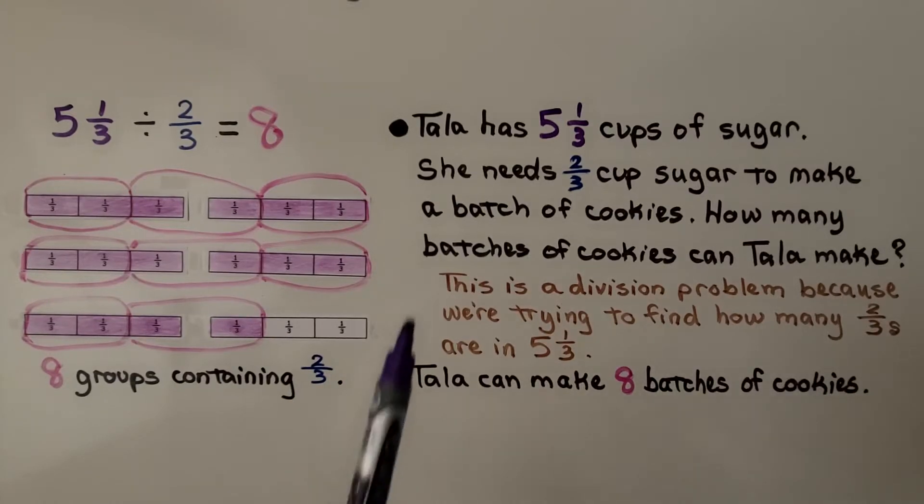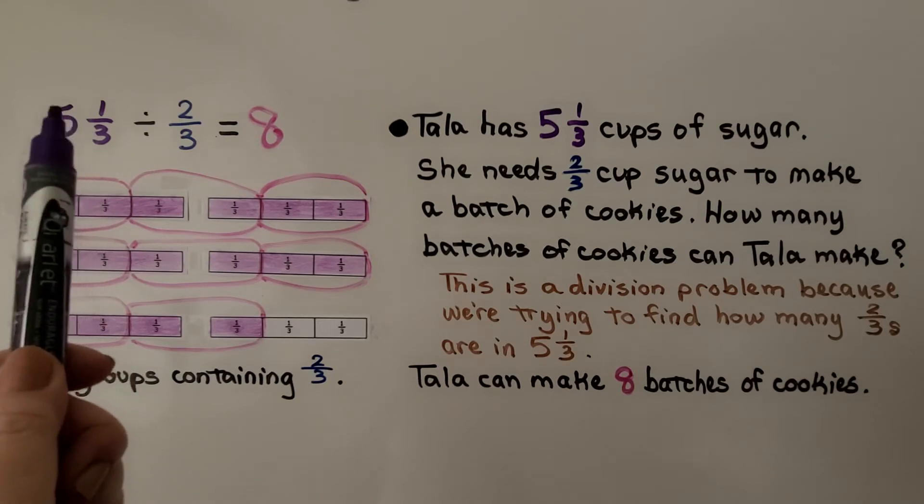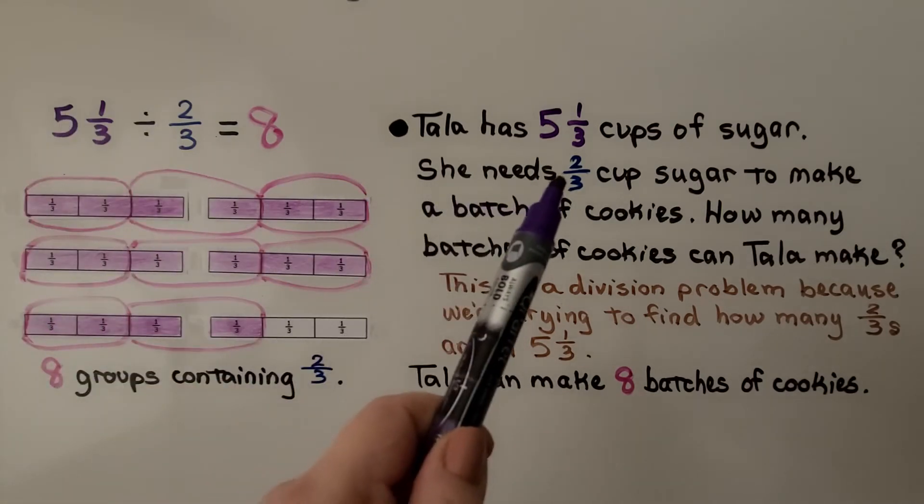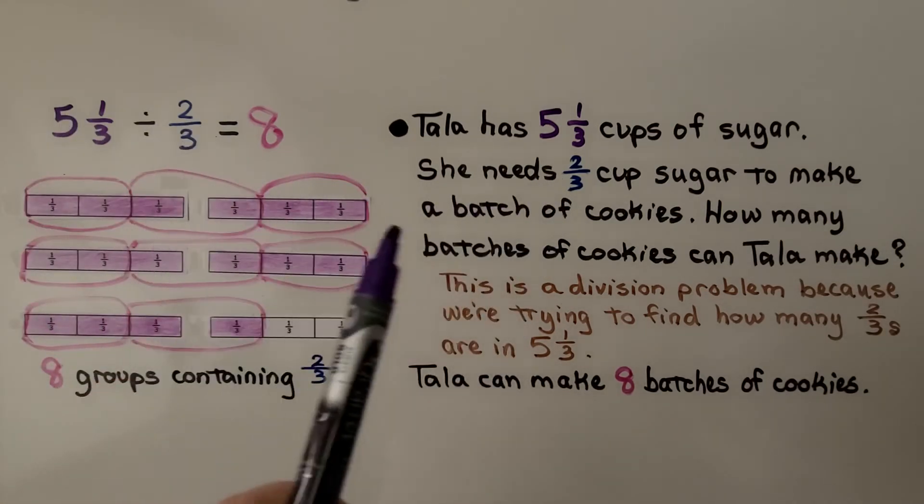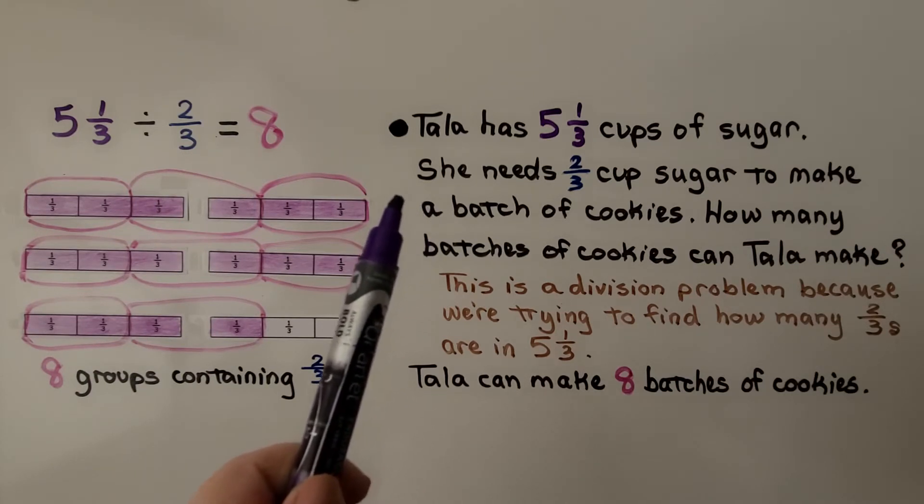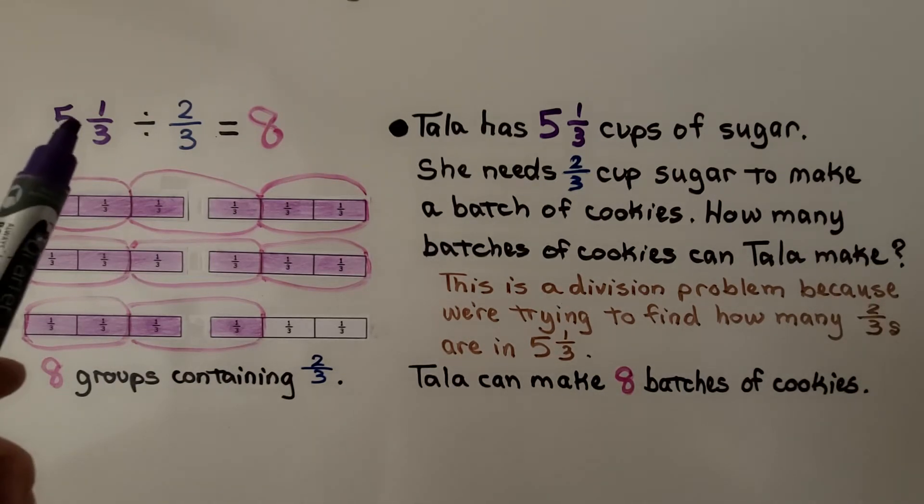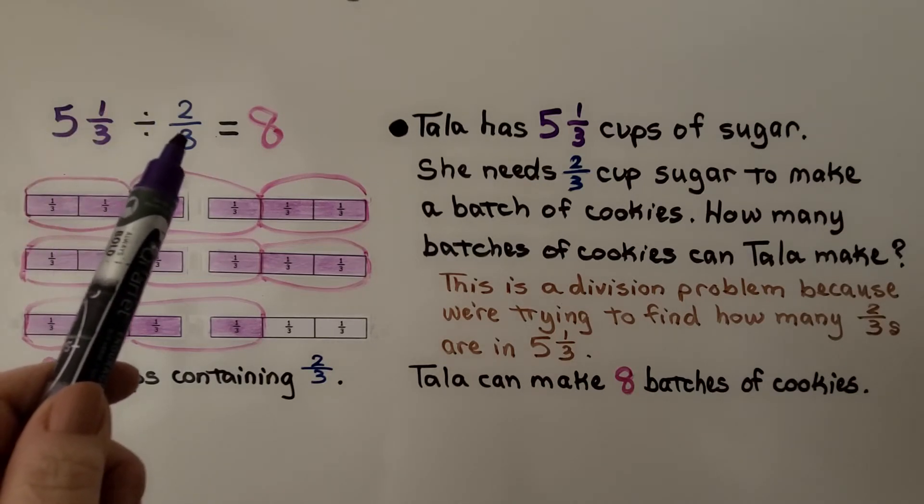Here we have a word problem. Tala has 5⅓ cups sugar. She needs ⅔ cup sugar to make a batch of cookies. How many batches of cookies can Tala make? She has 5⅓ cups of sugar. Each batch is ⅔ cup.